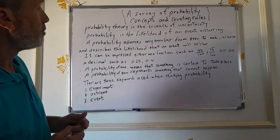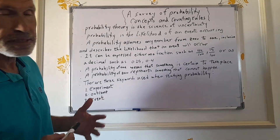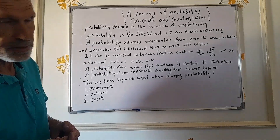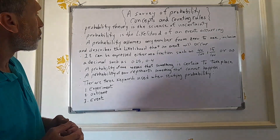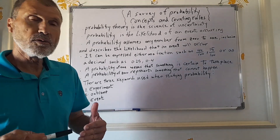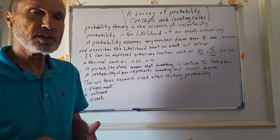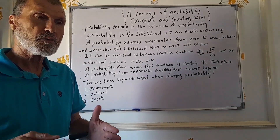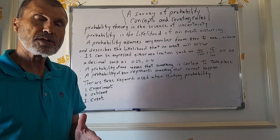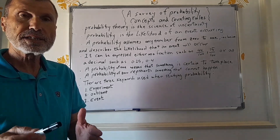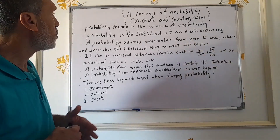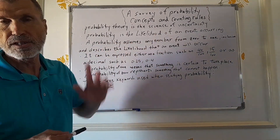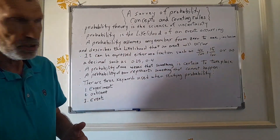This is the main concept — this science is the science of uncertainty. When we use the term probability, we mean likelihood or chance. The words likelihood and chance mean the same thing as probability. Probability is the likelihood of an event occurring, taking place in the future.